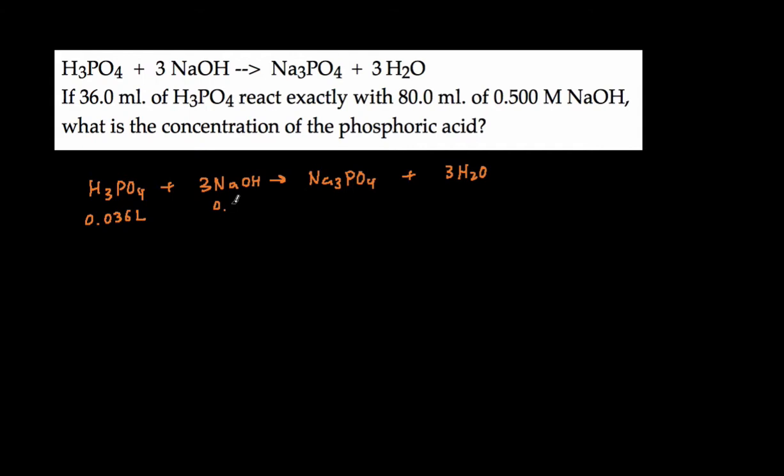And it reacts with 80 milliliters of 0.5 molar NaOH. So we know we're going to have 0.08 liters of this and 0.5 molar of NaOH. And we're trying to solve for the concentration of the phosphoric acid. So we're solving for the molarity. And let's call this, we'll call this 1 again, and then we'll call this 2.